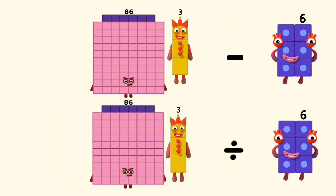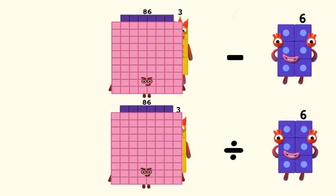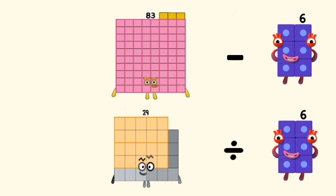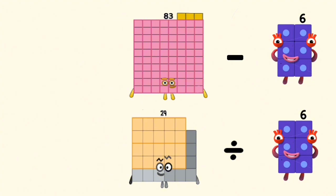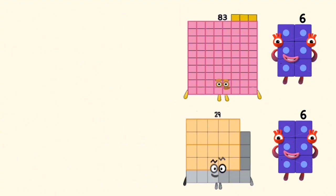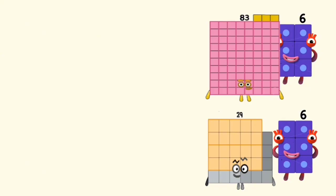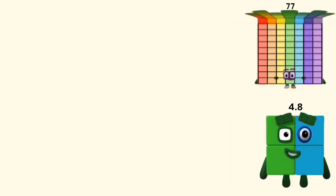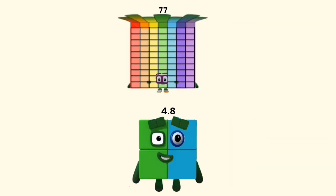86 minus and divided by 3 equals 83 and 29. 83 minus 6 and 29 divided by 6 equals 77 and 4.8.